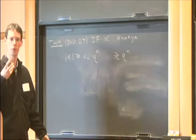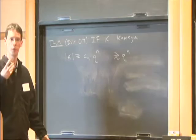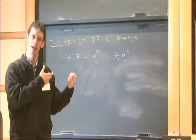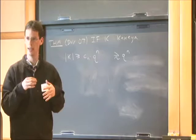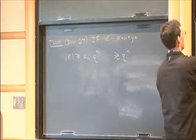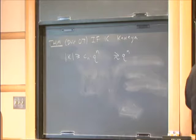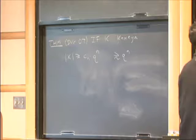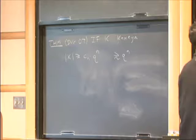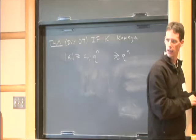The proof is very short and consists of two ideas. The first idea is that we should approximate this set K with a polynomial, or more precisely, we should find a polynomial whose zero set contains the set K. The proposition says: if we have any set in F^N, then there exists a non-zero polynomial of degree D that vanishes on the set X, where the degree D is controlled by the size of X to the power of 1 over N.